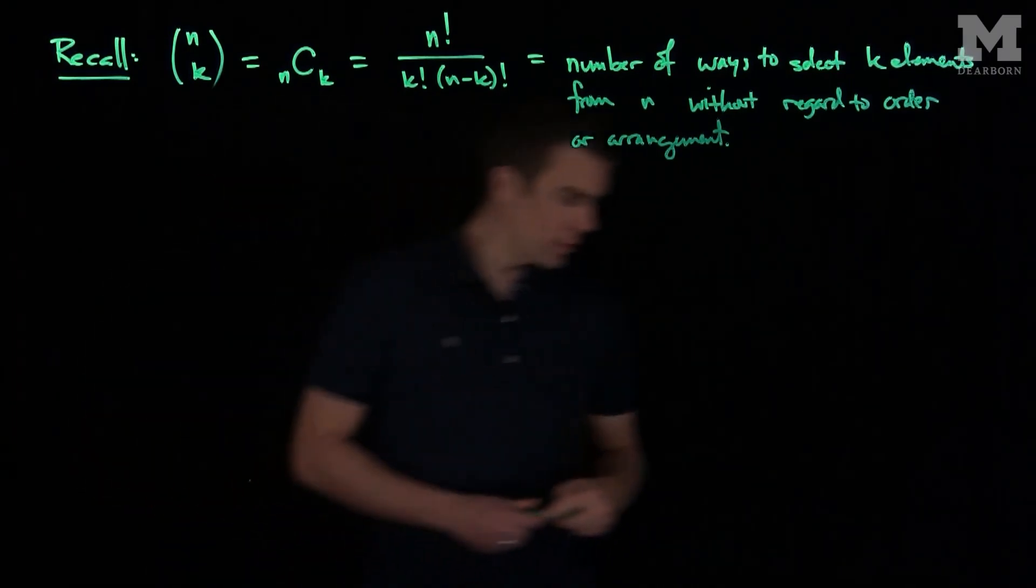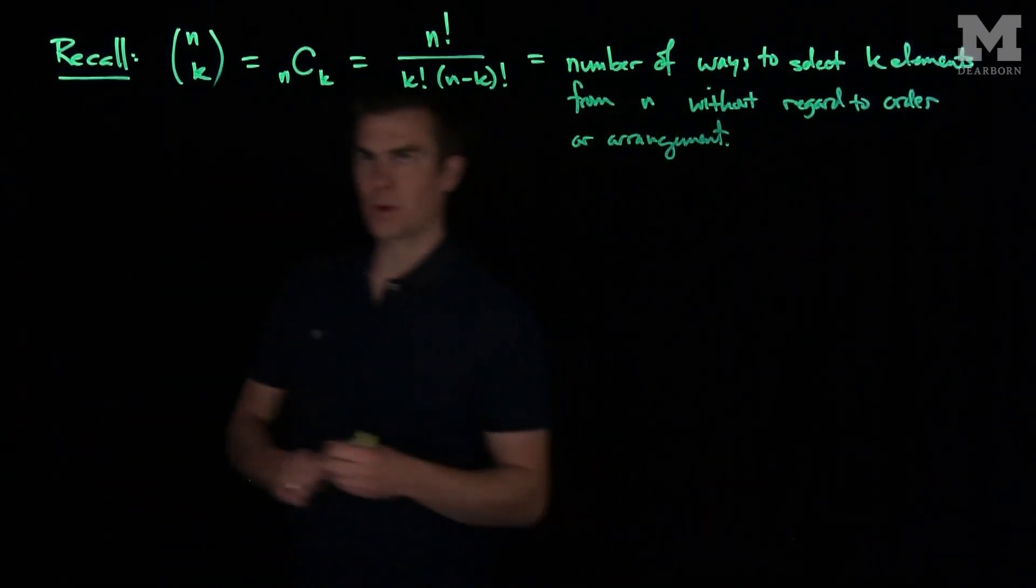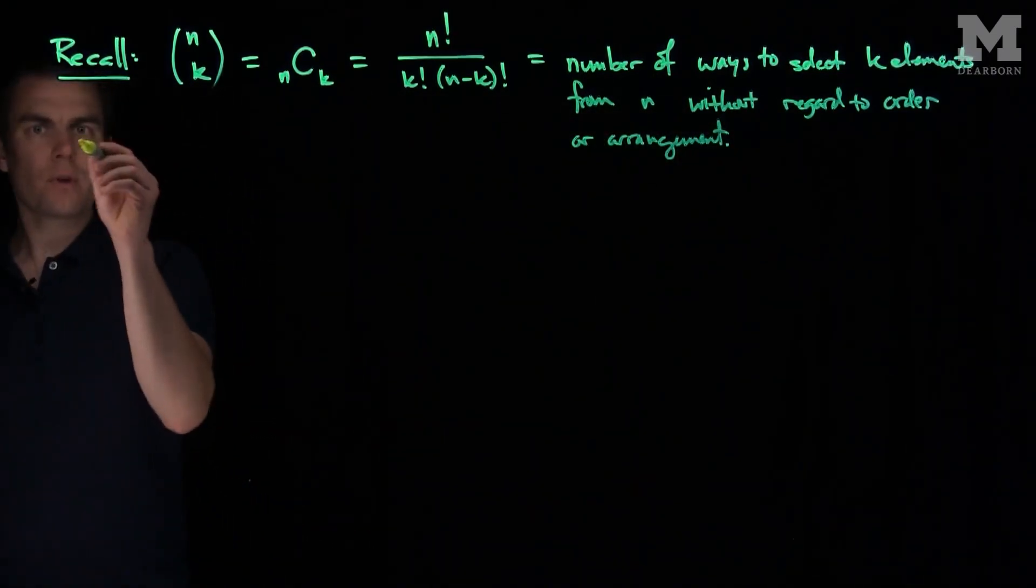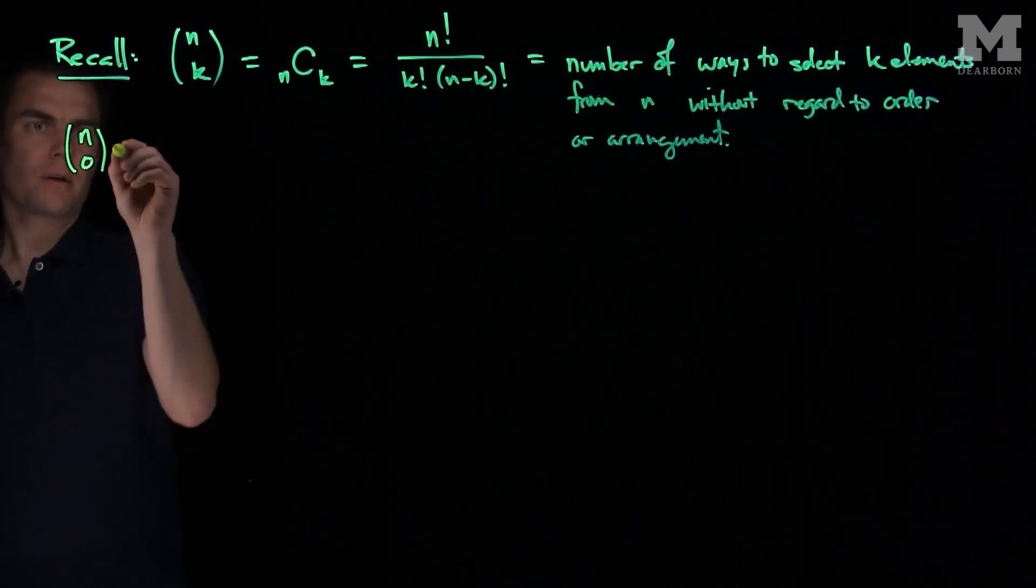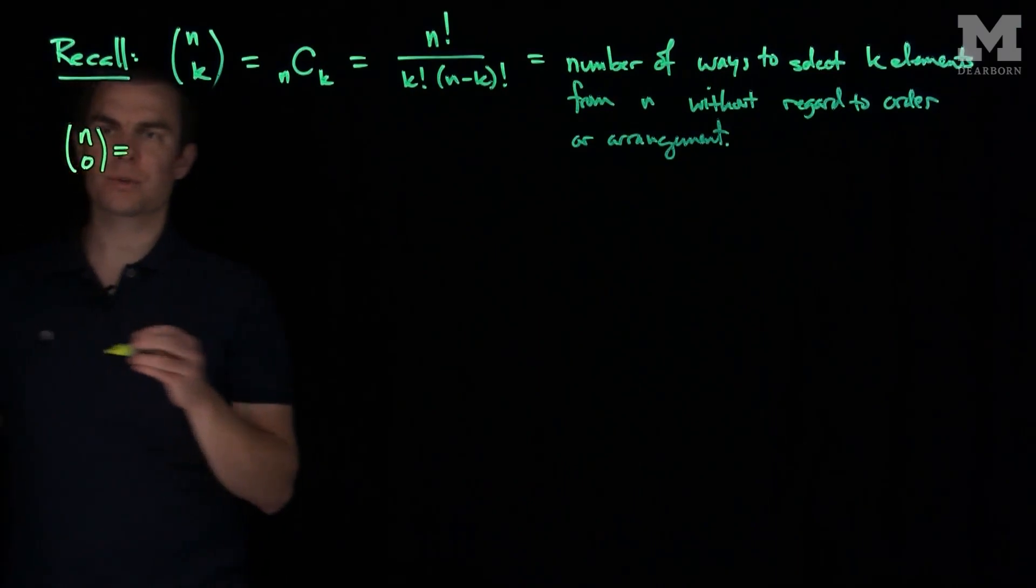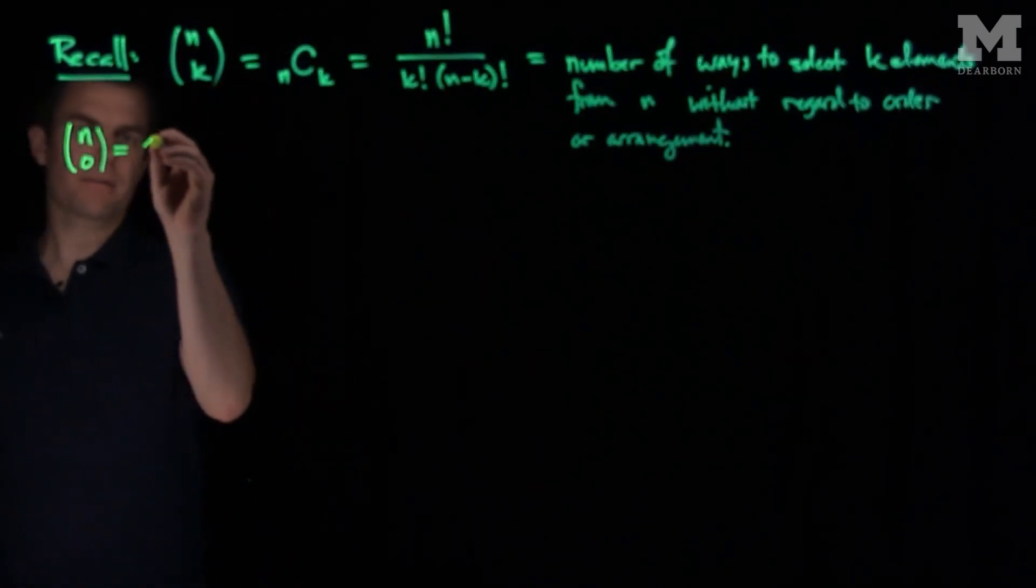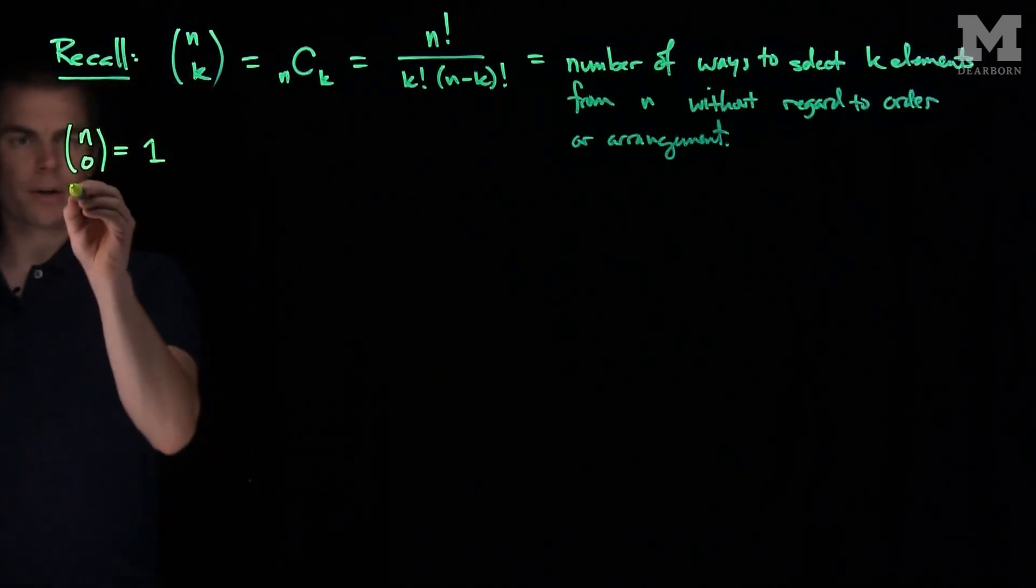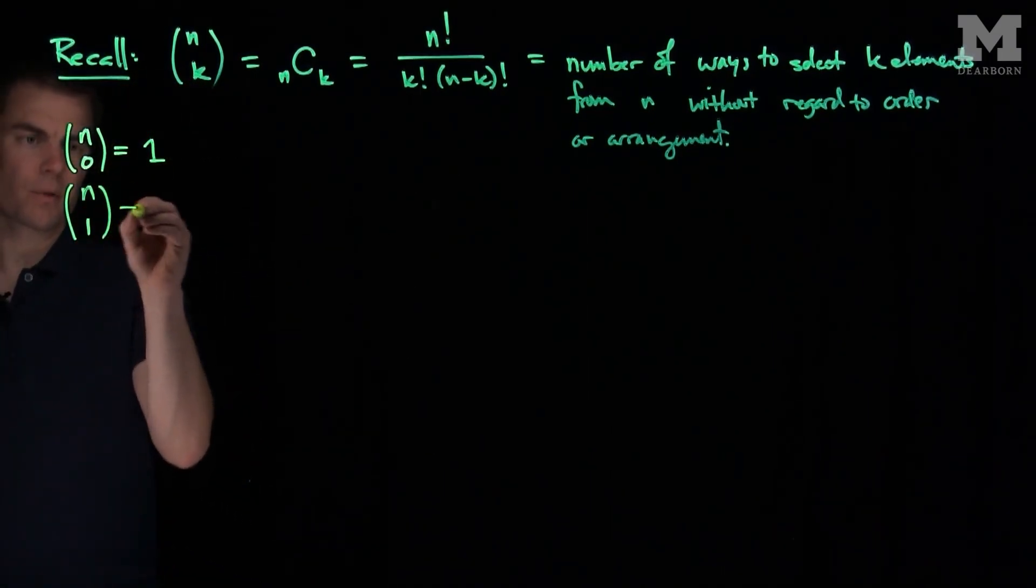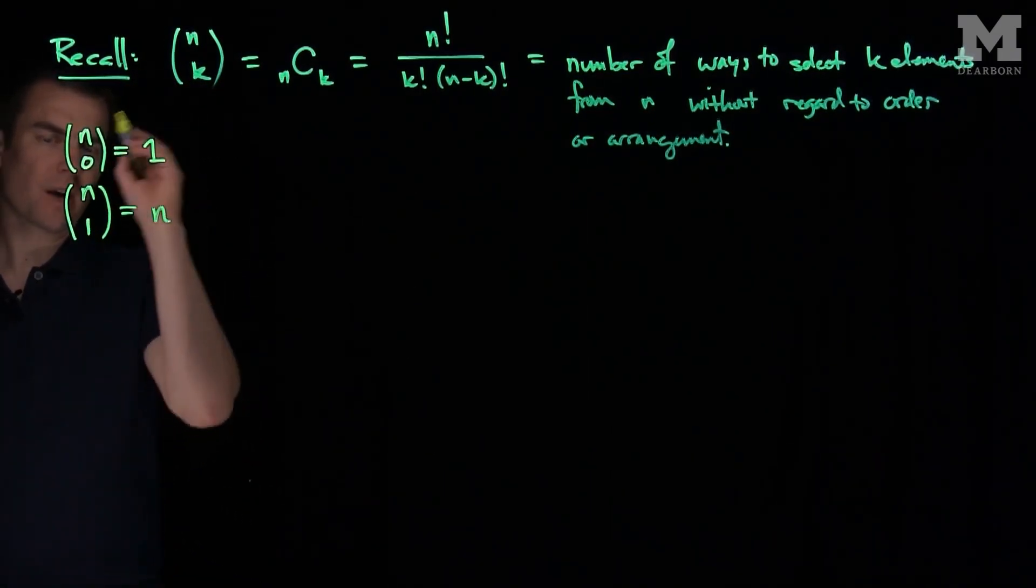And so there are several important properties. Let's talk about the first one. If we look at n choose 0, the number of ways to choose no elements from n is defined to be 1. And n choose 1 is the number of ways to choose one thing from n, so that would be equal to n.